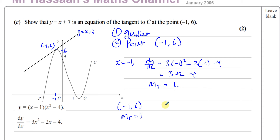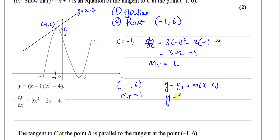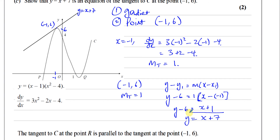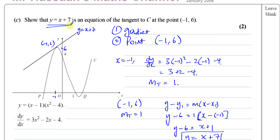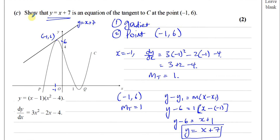Using y minus y1 equals m times x minus x1: y minus 6 equals 1 times x minus minus 1. Be careful — minus minus gives plus, so y minus 6 equals x plus 1. Adding 6 to both sides gives y equals x plus 7. That's the equation of the tangent at the point when x equals minus 1, and we've shown it equals y equals x plus 7.